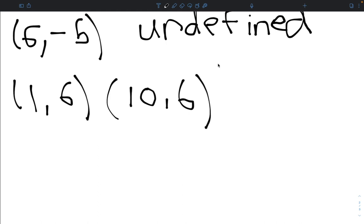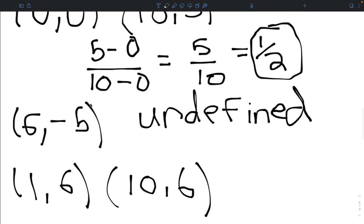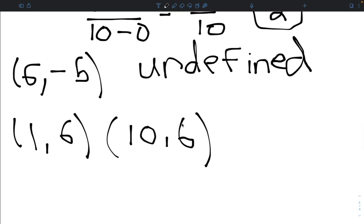Now here, we're just going to repeat the process that we did above. Now, y1 minus y2, 6 minus 6, over x1, which is 10, minus x2, which is 1. So, 10 minus 1. So, with this, we're going to get 6 minus 6 is 0, and 10 minus 1 is 9.